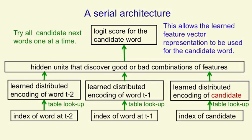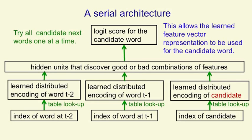we're able to use the learned feature vector for that candidate word that we learned when it was a context word. So we can have the same representation of the word when it's part of the context and when it's a candidate for the next word that we're trying to predict.